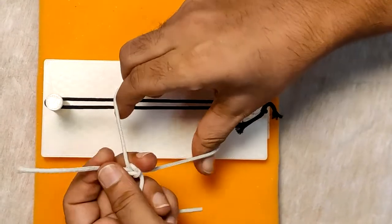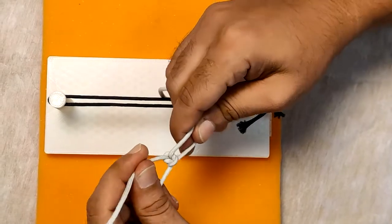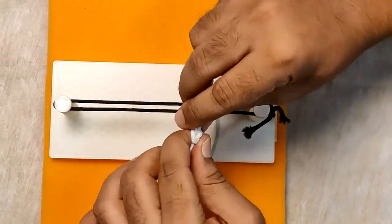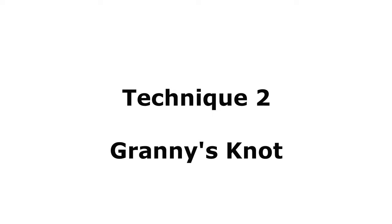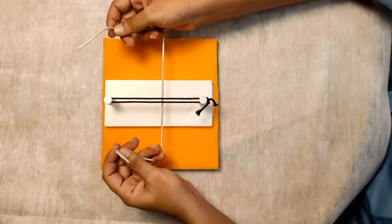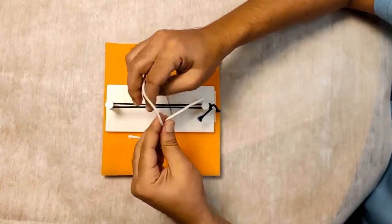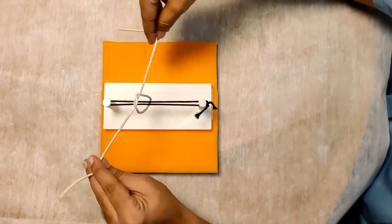Now coming to the granny's knot. This type of knot has a similar method of tying like a reef knot, but the only difference is that you're taking a single through knot in one direction and again you're taking a single through knot in the same direction. It should